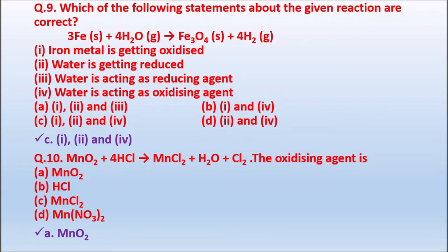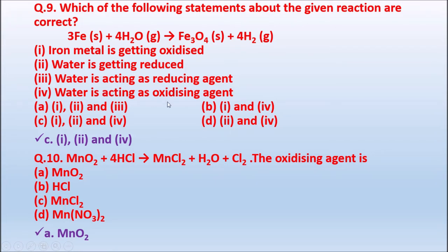Question 9: Which of the following statements about the reaction 3Fe(s) + 4H₂O(g) → Fe₃O₄(s) + 4H₂(g) are correct? Statements: iron metal is getting oxidized; water is getting reduced; water is acting as reducing agent; water is acting as oxidizing agent. The correct answer is Option C — iron metal is getting oxidized, water is getting reduced, and water is acting as an oxidizing agent.